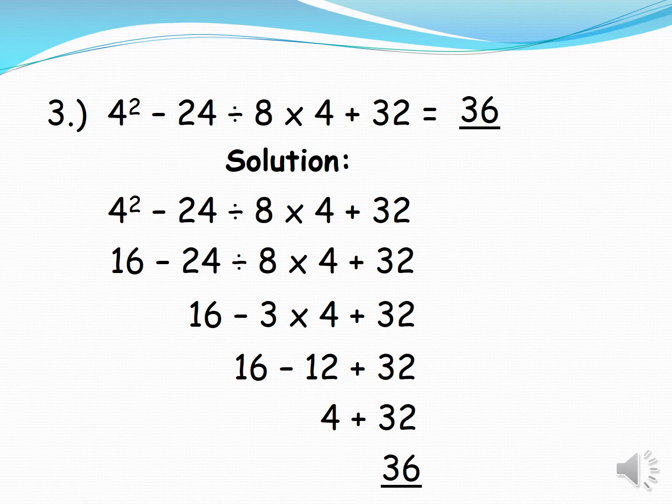Example 3: 4²−24÷8×4+32=36. Solution: 4²=16, then 24÷8=3, then 3×4=12, then 16−12=4, then 4+32=36.